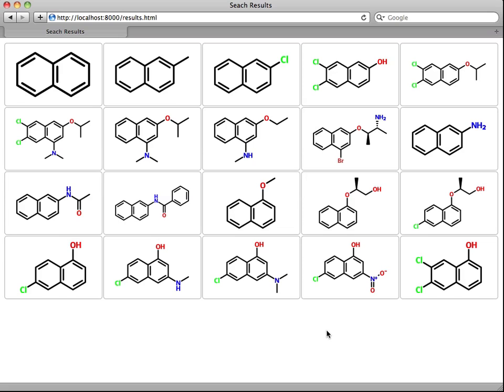But instead of serving a collection of raster images created on a server, structure images are generated in the browser, directly from MOL files.